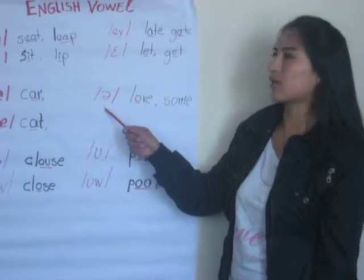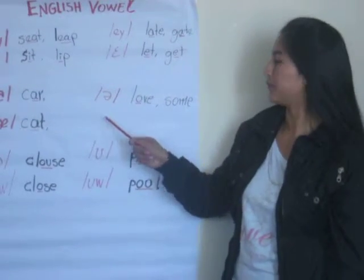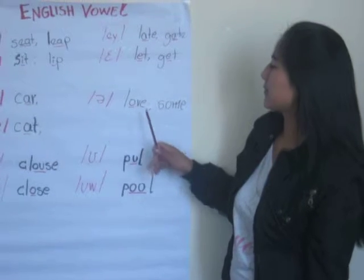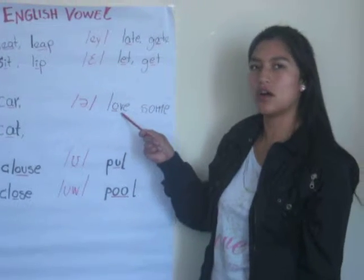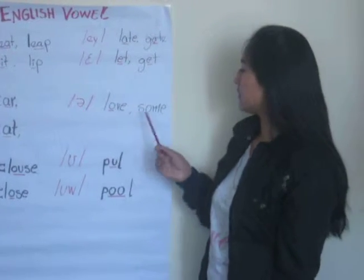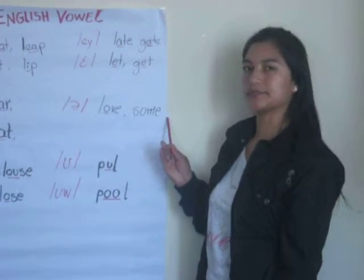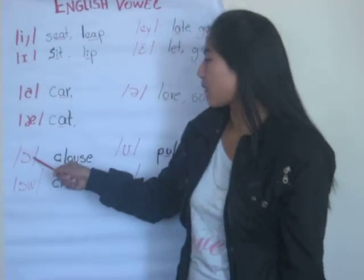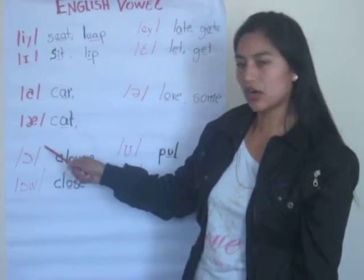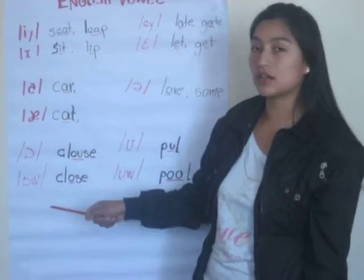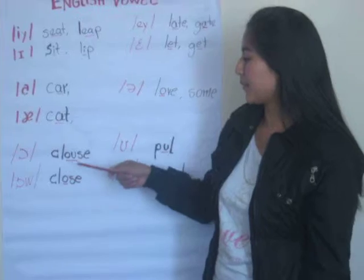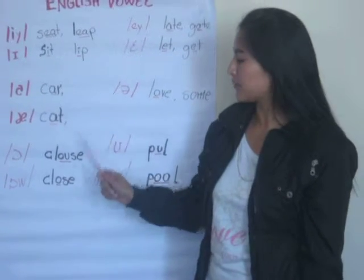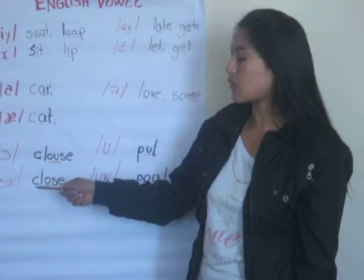This vowel is schwa. For example, pronounce in this word: love, other. This vowel is short, this vowel is long. For example, pronounce close.